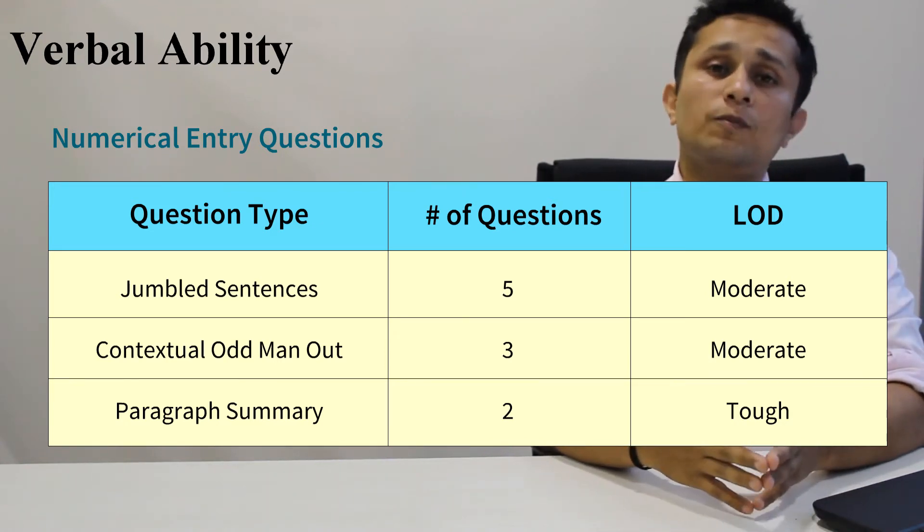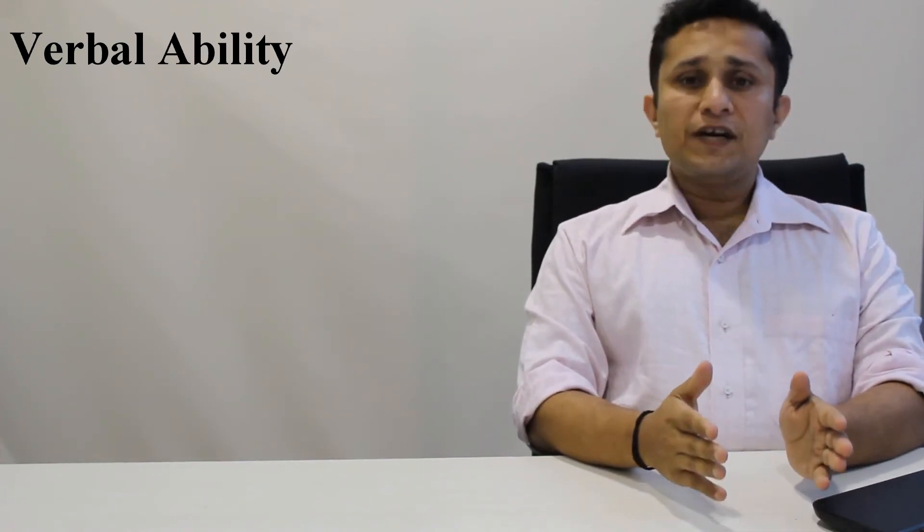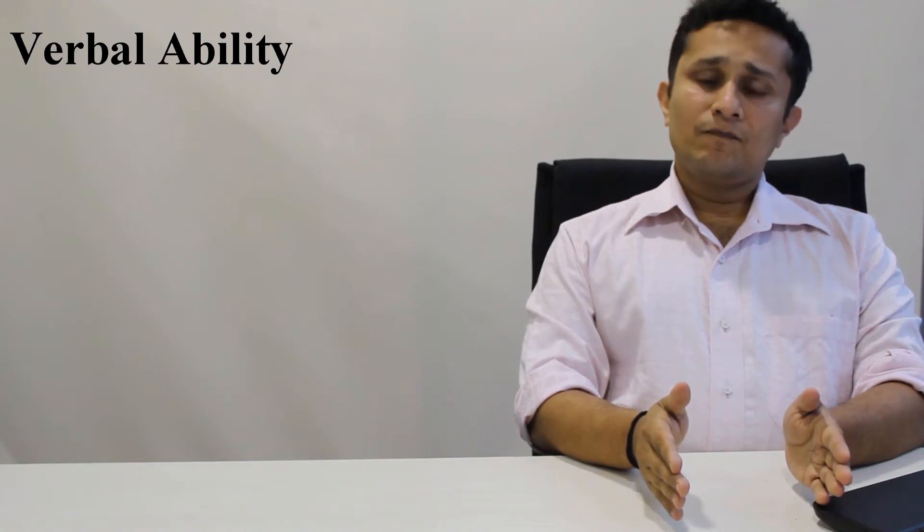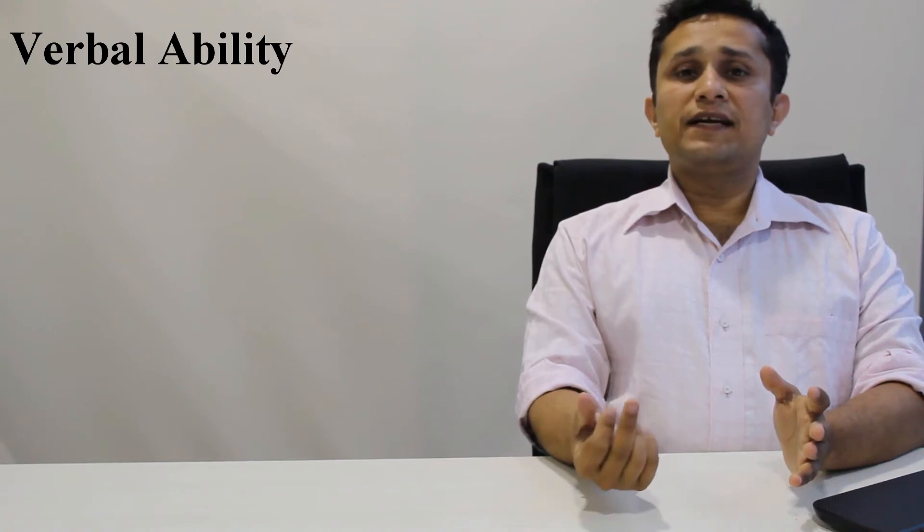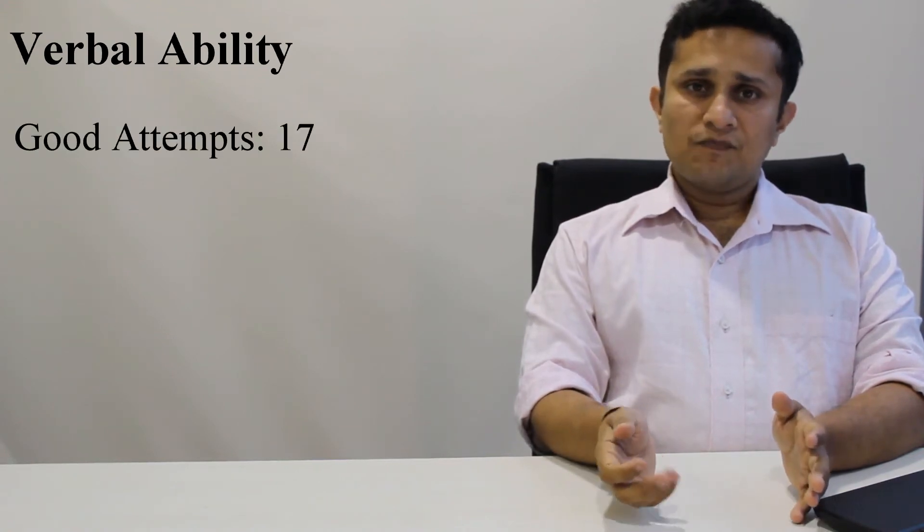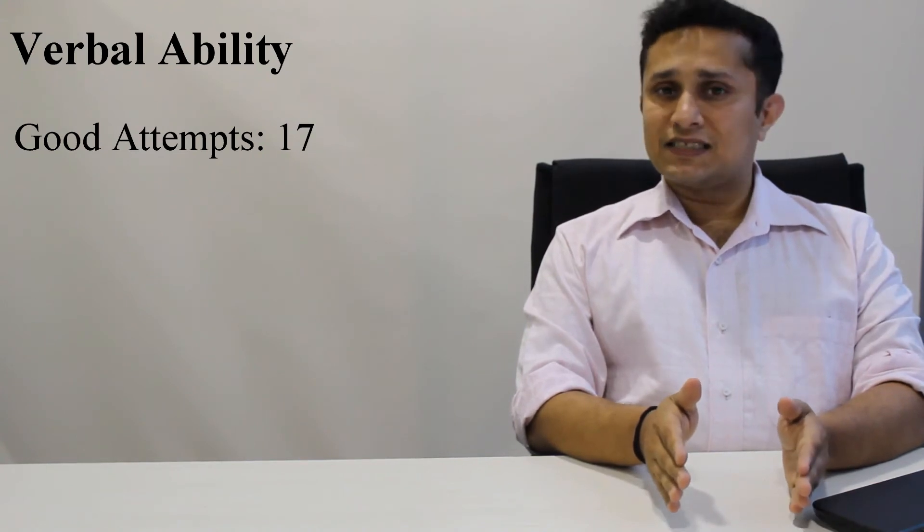On the whole, what would be a good performance for this section? It would be around 14 to 15 questions in the RC, and 1, 2, or probably 3 questions on a very serious note in the theta or numerical entry questions. 17 attempts would be a good performance as far as this section is concerned.